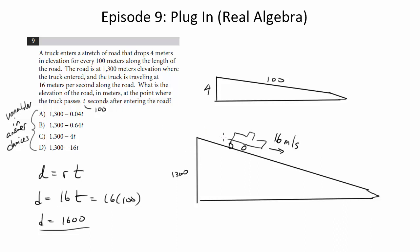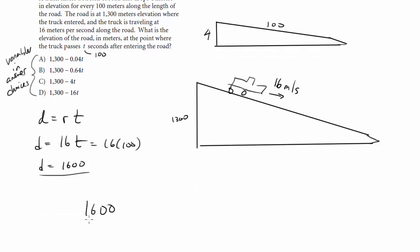So if I am traveling 1600 meters along the road, if I'm dropping 4 meters for every 100 notice if I divide 1600 by 100 I get 16 times that by 4 and I'm going to get 64 meters of drop because I'm going to have 16 hundreds in the distance and for each of those hundreds it's going to be four meters of drop so I'm going to drop 64 meters so my answer should be 1300 minus 64 which is 1236.